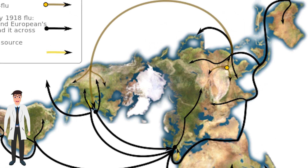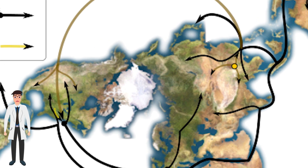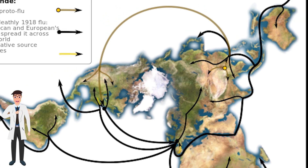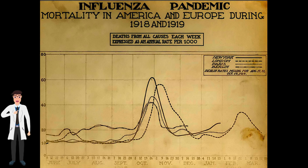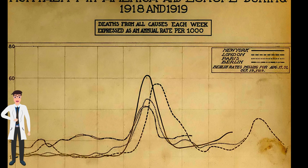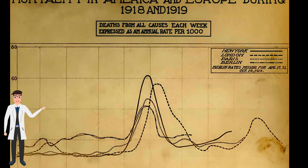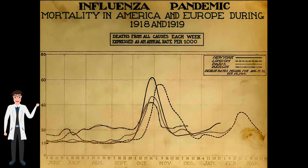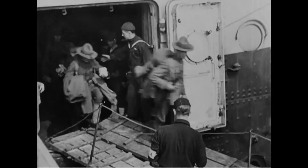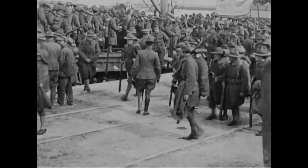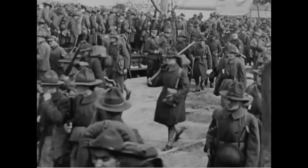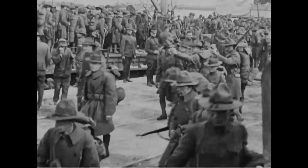Some countries implemented rules such as wearing masks, quarantine, and social distancing to resist the disease, but these measures were applied too late or insufficiently. The pandemic quickly spread across North America, Europe, Asia, Africa, Brazil, and the South Pacific. Inadequate health services of the time dramatically increased death rates, and the movement of people, armies, and ships due to the war further accelerated the spread.